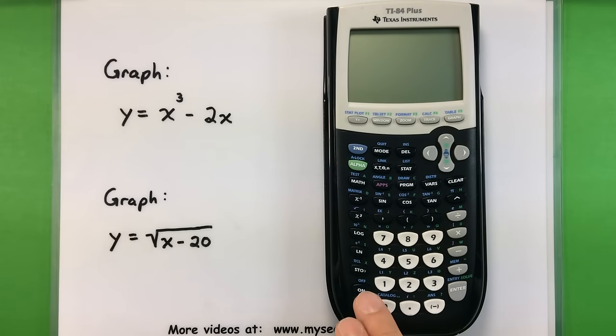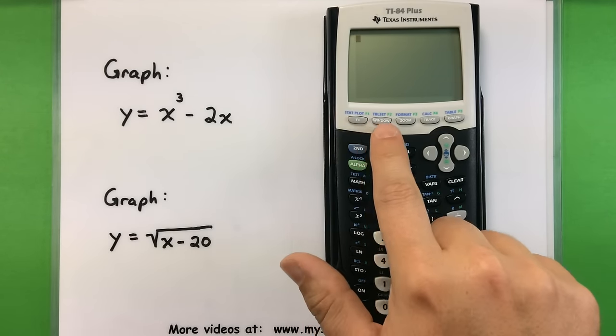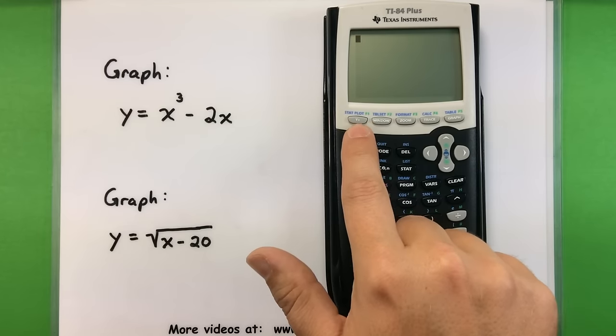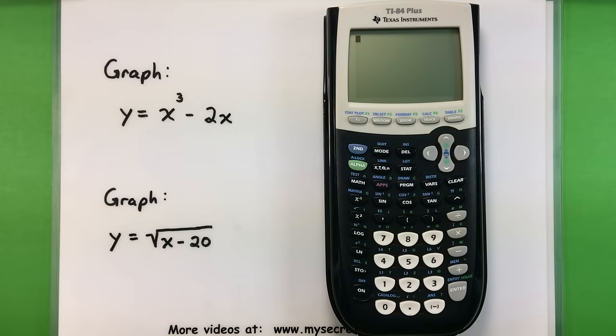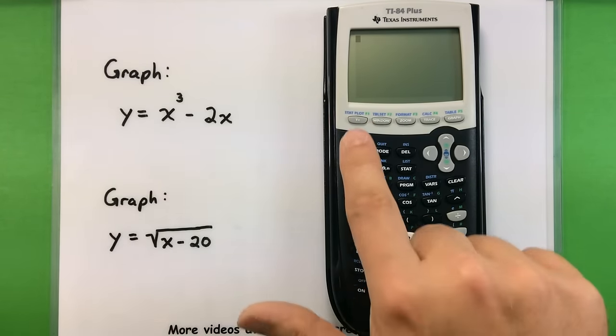So the first thing we're going to do is turn on our calculators and get to the part of the calculator where we need to enter in our equations. This is what we call the Y equals screen. And if we're on our home screen we can access the Y equals screen by pressing this left button here. It says Y equals. So let's go ahead and press that.